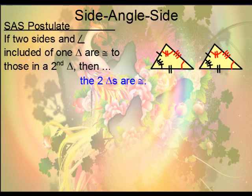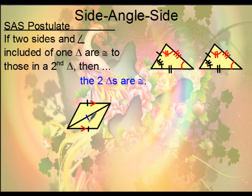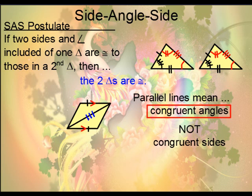Here's one last SAS example. We have a pair of parallel lines and a side that the triangles share — the reflexive property allows us to identify that as a side. These two sides are also marked congruent, which is nice. Remember, parallel and congruent are not the same thing. When you have parallel lines, that almost always means you're going to have congruent angles, not necessarily congruent sides.